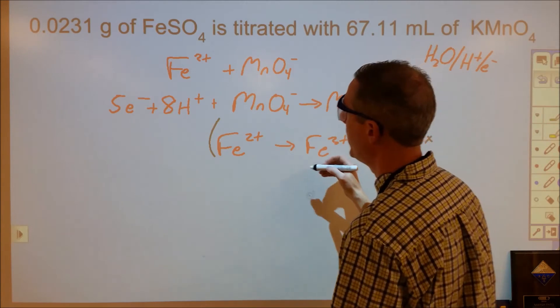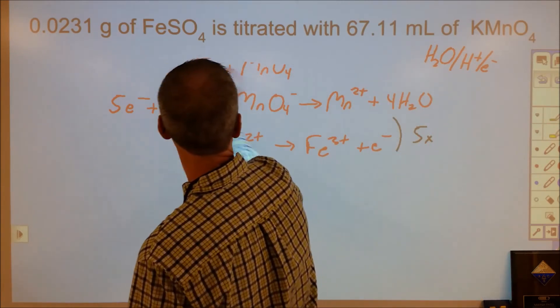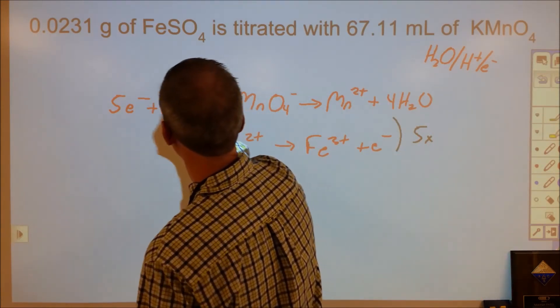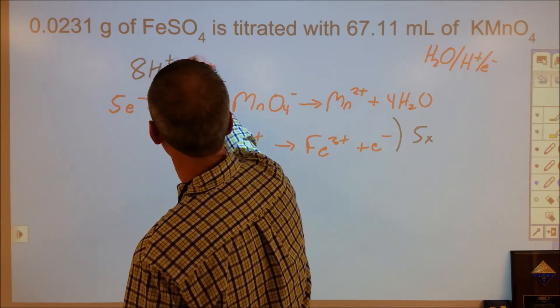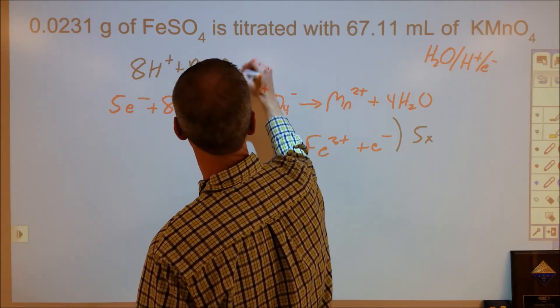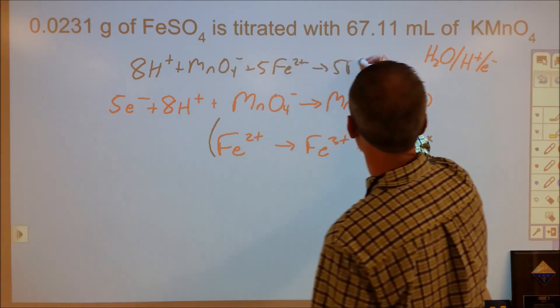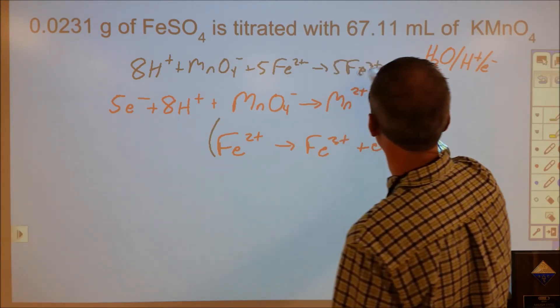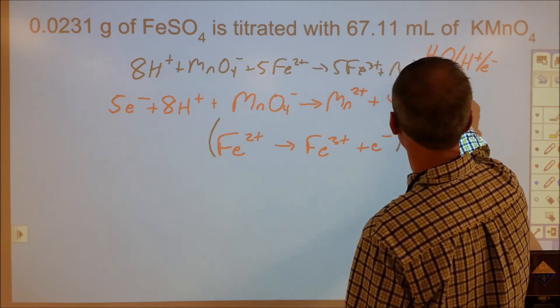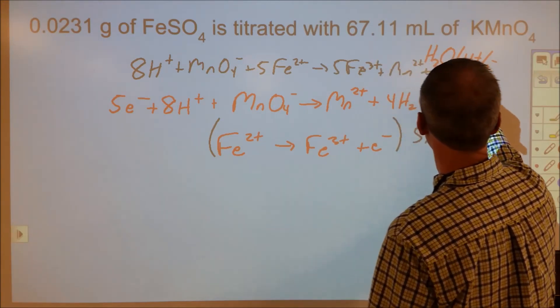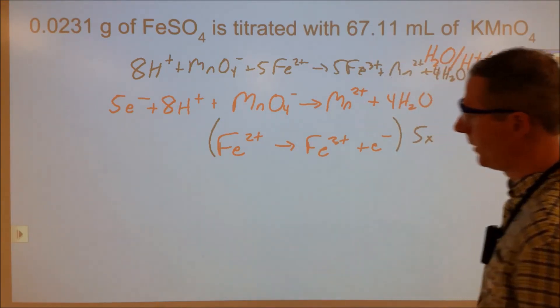Okay, so overall I'm going to end up, actually I'm going to put this at the top here, and end up with 8H⁺ + MnO₄⁻ and then five Fe²⁺ turning into five Fe³⁺ plus Mn²⁺ plus four H₂O through the transfer of five electrons.